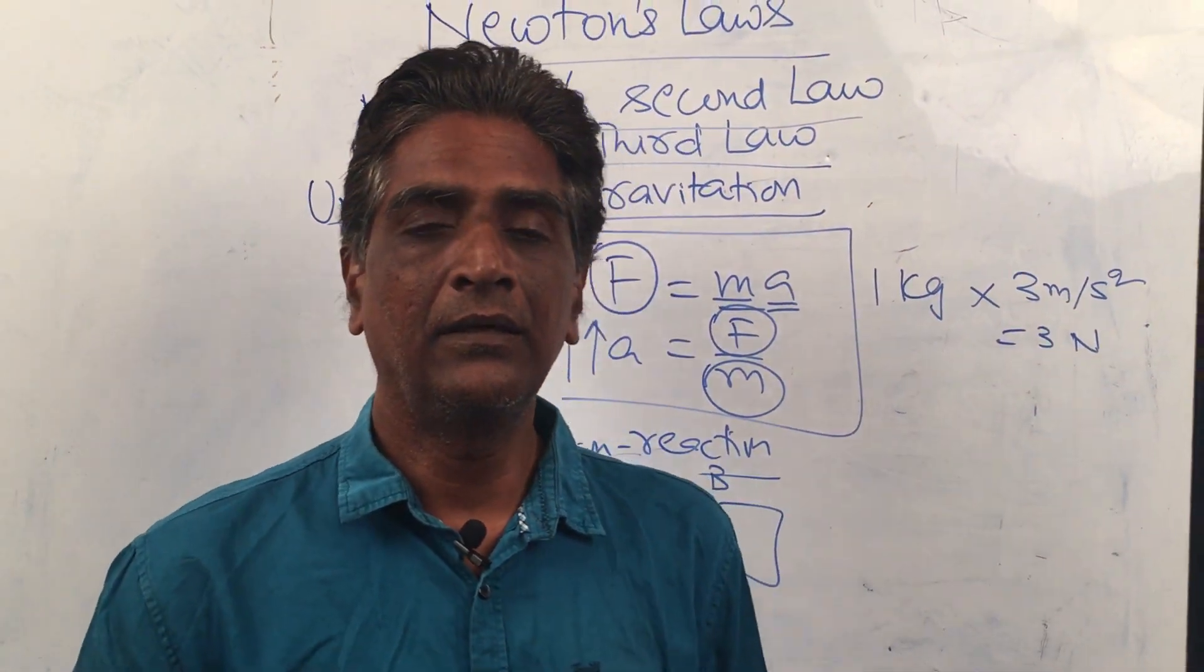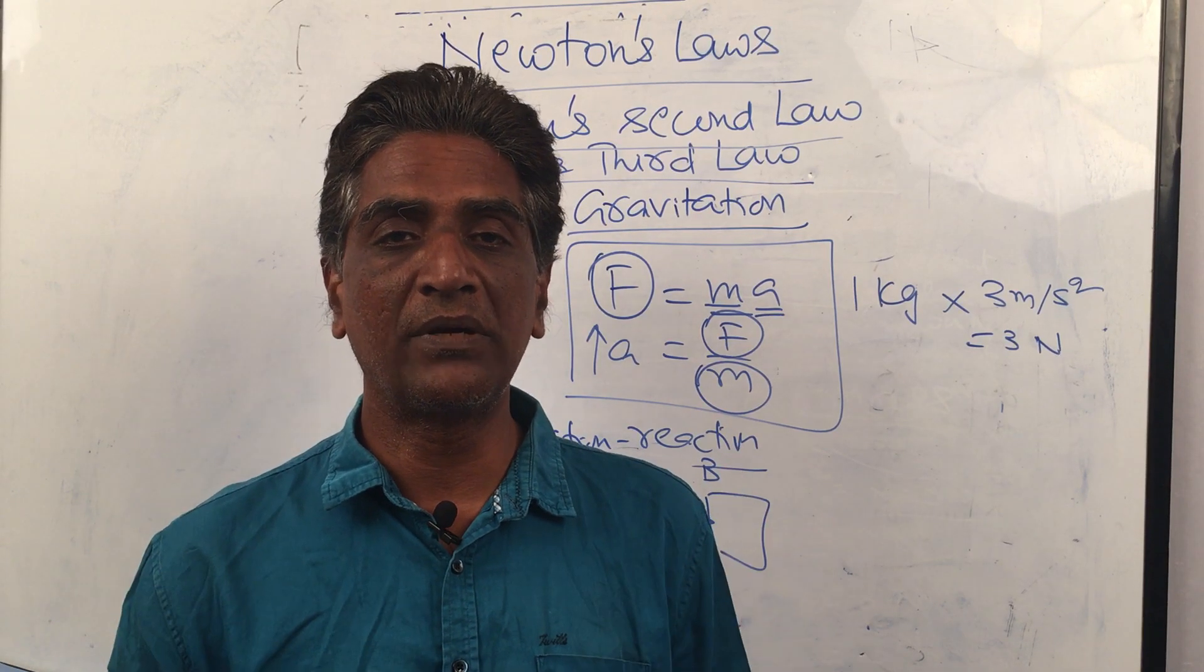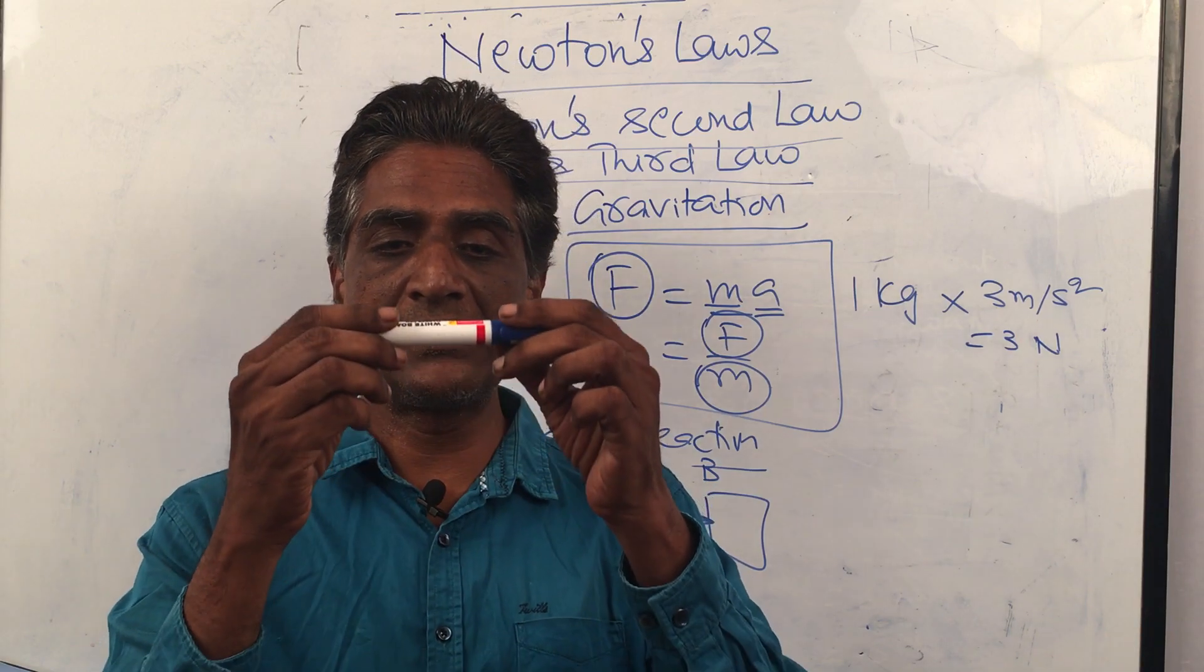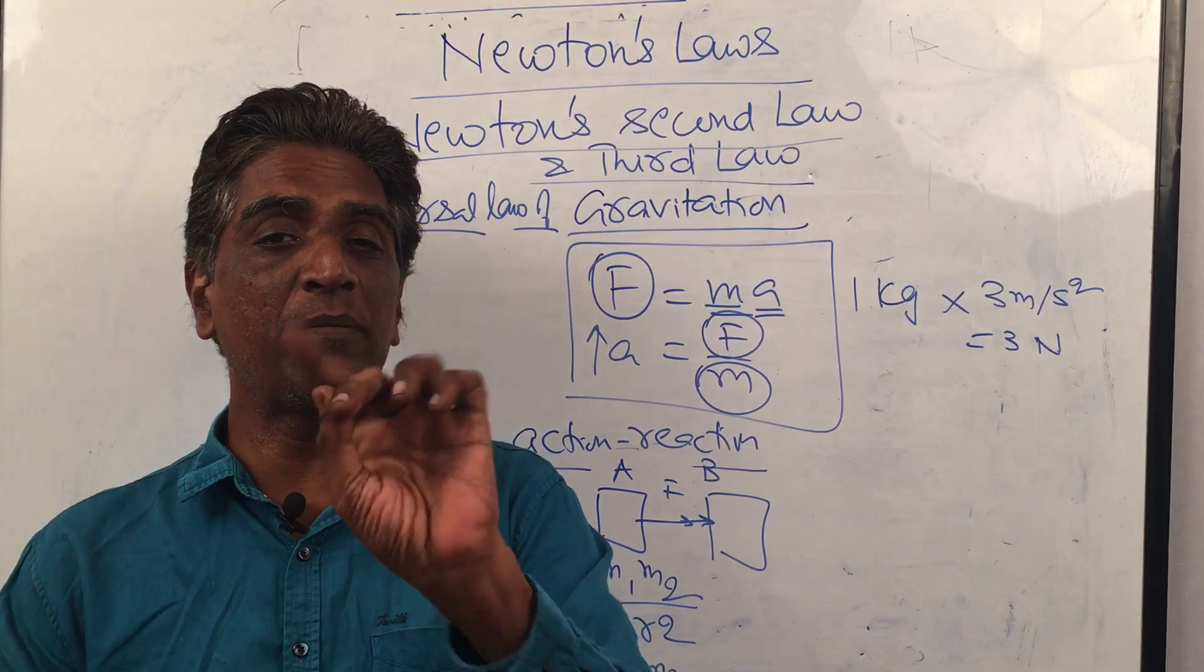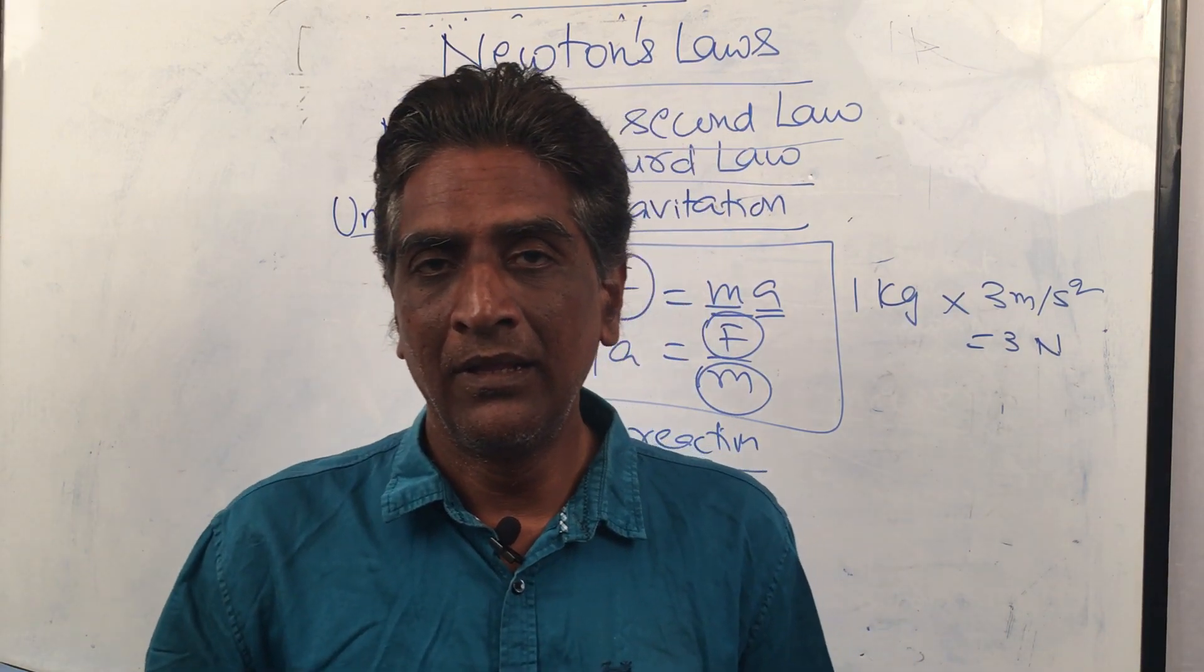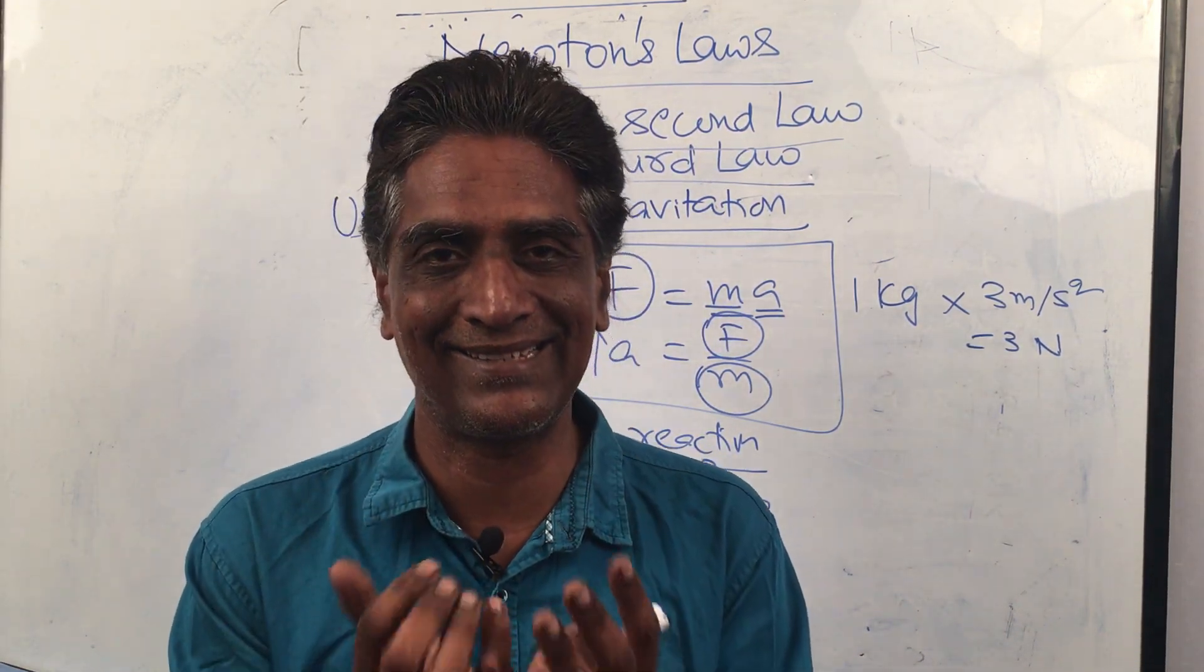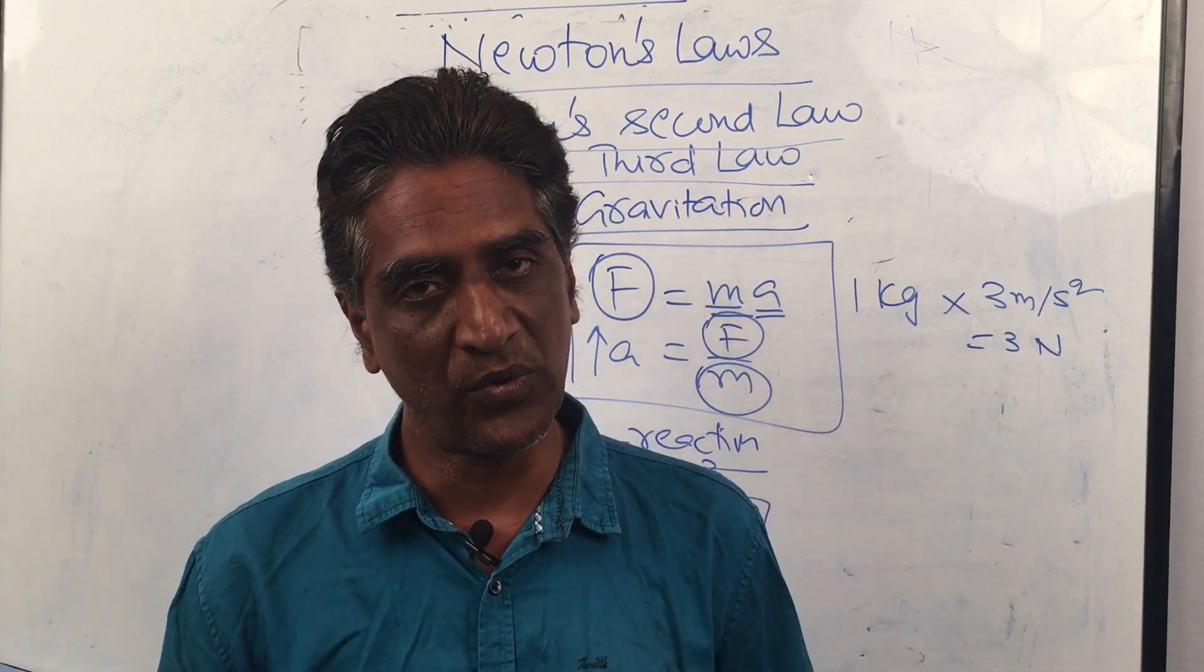Universal law of gravitation means in the universe, every mass attracts every other mass. Why does this body fall? Because Earth is attracting it. But this body is attracted by Moon also. On the Moon it falls slower. Its acceleration due to gravity is lesser because Moon is smaller. Its mass is less.